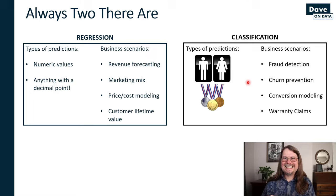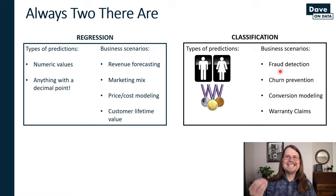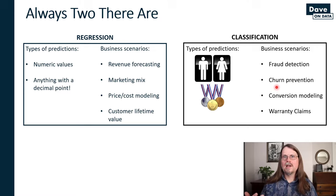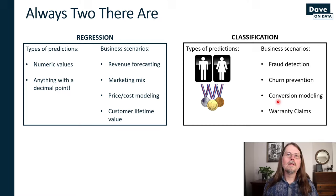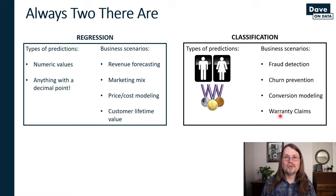In the business world, the number of scenarios where you're trying to predict a state is extremely common. For example, fraud detection — if you work for a credit card company, what is the predicted state of this authorization: legitimate or fraudulent? Churn prevention — predicting whether a customer is going to leave your company. Conversion modeling — predicting whether someone visiting your website will become a customer or abandon their shopping cart. And warranty claims — is this a legitimate claim or not? Classification is super useful. These are the two general families: regression and classification.